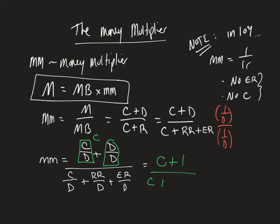Which would then be little c plus, remember R over D was little RR, and then ER over D, which is the excess reserve to deposit ratio, is little e.